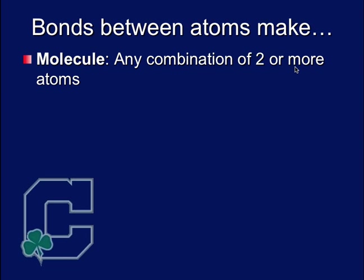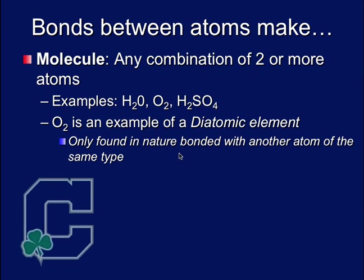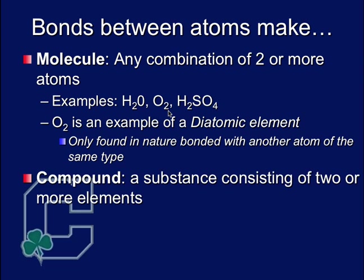So, bonds between atoms make molecules and compounds. The difference is molecules are any combination of two or more atoms. So, H2O, yep, that counts because there's three different atoms there. O2 would count because there's two oxygens, so O2 is a molecule. And O2 is a special kind of molecule because it's known as a diatomic element, meaning that in nature you can only find oxygen as O2. You can't just find oxygen as just O. In fact, if you found just O, that's actually poisonous. On the flip side, a compound is any substance consisting of two or more elements in different ratios. So, Na and Cl, that would be a compound because it's two different elements. CHO, in other words, C6H12O6, that would be a compound because it's three different elements. But O2 would not be a compound because it's only one different element. So, in other words, all compounds are types of molecules, but not all molecules are compounds.